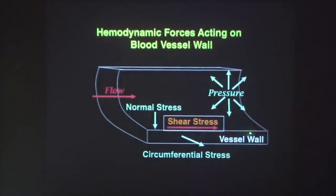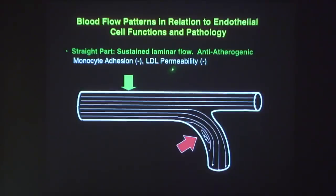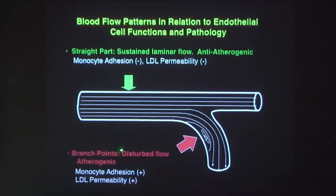Shear stress is parallel to the vessel wall as a result of flow. In the straight part of the aorta the flow is laminar — there is very little monocyte adhesion and very little LDL permeability, so the laminar flow is anti-atherogenic. In contrast, branch points have disturbed flow with eddies, recirculation, stagnation points, and reattachment zones — monocyte adhesion is high, cell turnover is high, and LDL permeability is high. Both are atherogenic at branch points.